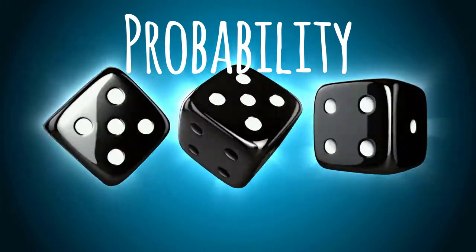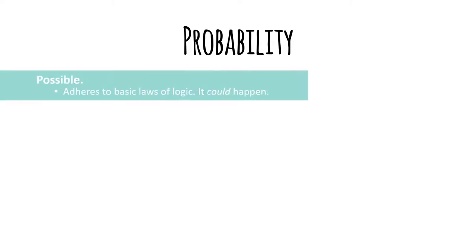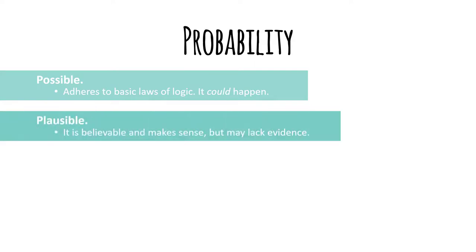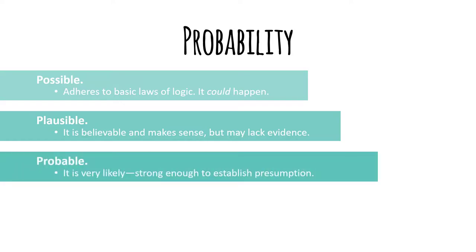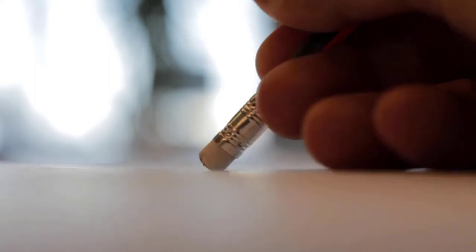Probability is the last way to think about impacts. This asks us to consider which outcomes are most likely. Probability happens on a continuum: if something is possible, it's unlikely but feasible based on laws of logic; if plausible, it may ring true on face or with common sense but lacks concrete evidence; if probable, it will likely happen; and if proven, the outcome is basically guaranteed. In a debate, you might argue about how probable it is that nuclear proliferation would lead to nuclear war. Incorporating impact calculus and using this vocabulary can give you an edge, because it means you are explaining clearly to the judge how they should evaluate the round and explicitly identifying the arguments you are winning.